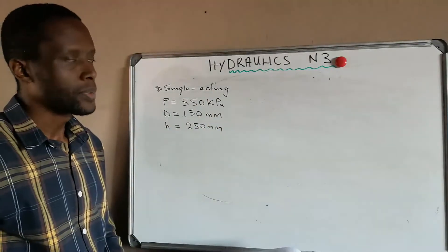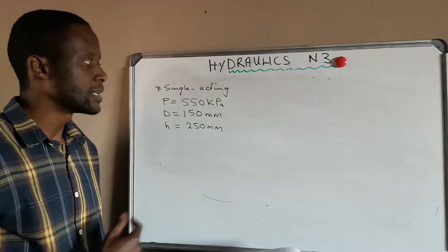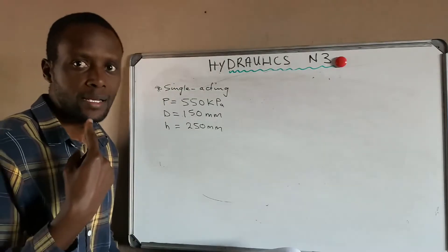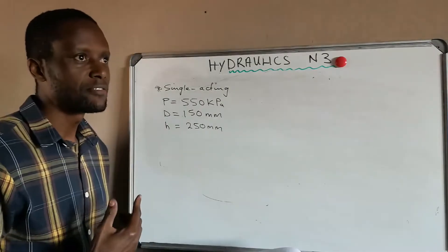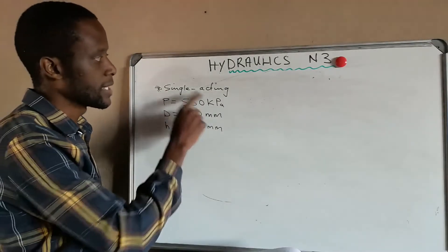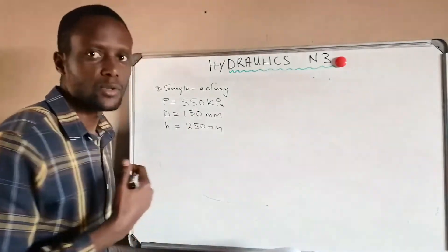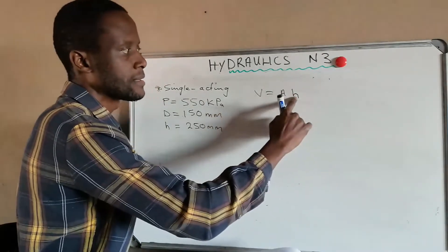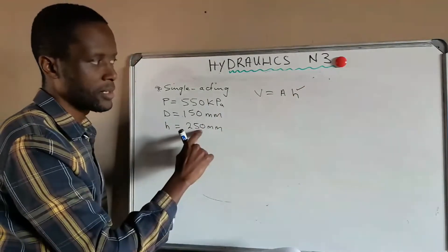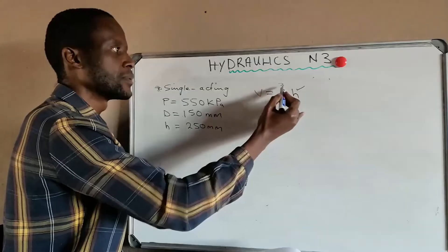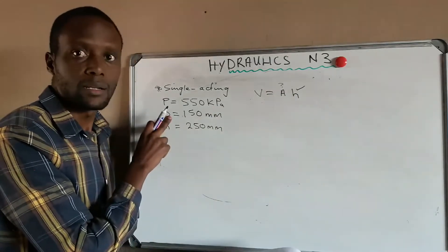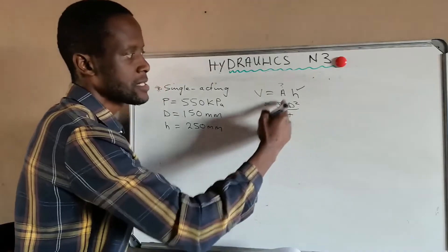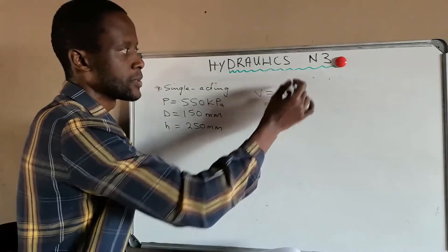Keep in mind this is a single acting pump. If it were a double acting pump, we would multiply the volume by two because a double acting pump delivers twice in one stroke. For a single acting pump it only delivers once per stroke. For the volume per stroke: volume equals the area of the piston times the stroke length. We have stroke length 250mm, but we need the area from the diameter.